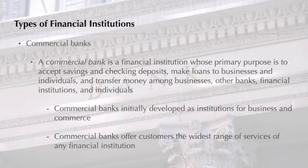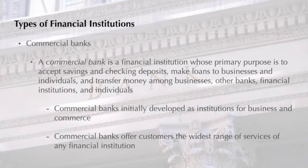In 2019, nearly 11,000 commercial banks existed in the United States. The main functions of commercial banks today are to lend money, accept deposits, and transfer money among businesses, other banks, financial institutions, and individuals. Commercial banks make almost 40% of all mortgage loans and almost 50% of all other loans. In the 1800s, commercial banks developed as institutions for business and commerce, but in the early 1900s they began offering services to individuals. Today, commercial banks generally offer customers the widest range of services of all financial institutions.